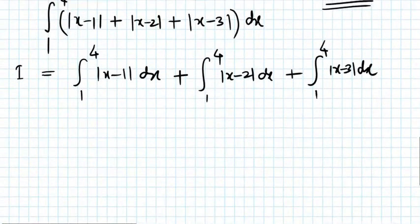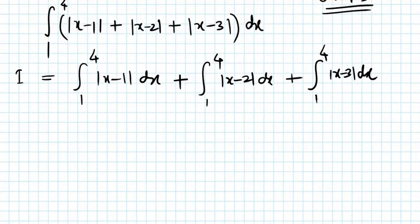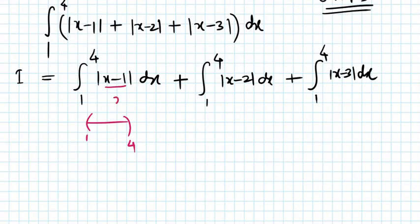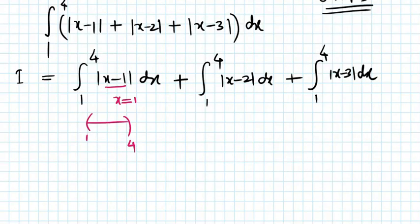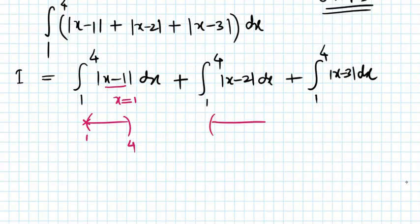In this first integral, the lower limit is 1 and the upper limit is 4. The critical value of |x minus 1| means we find the critical value by putting the modulus function equal to zero. So x minus 1 equals 0 gives us x equals 1, which is lying at the boundary, not in between the limits 1 to 4.